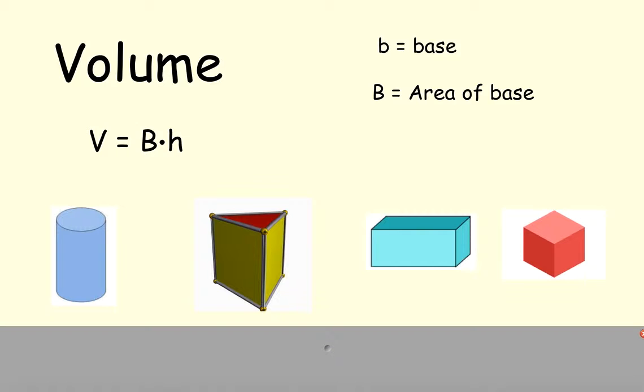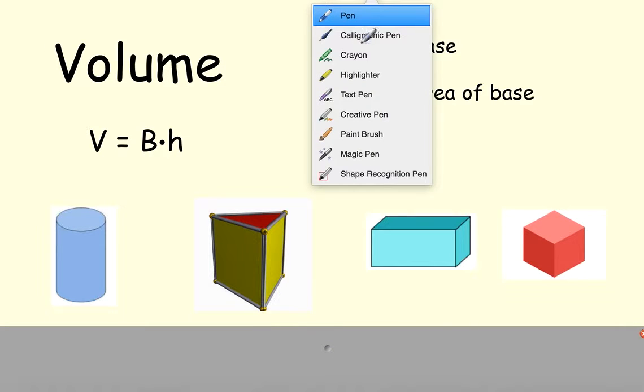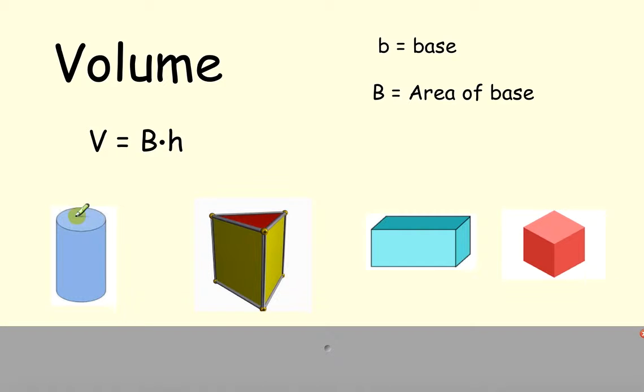So for this first one, the base is going to be this shape right here, which is a circle. On this one, the base is a triangle. On this one, the base is a rectangle. And finally, in this case, it's a square.